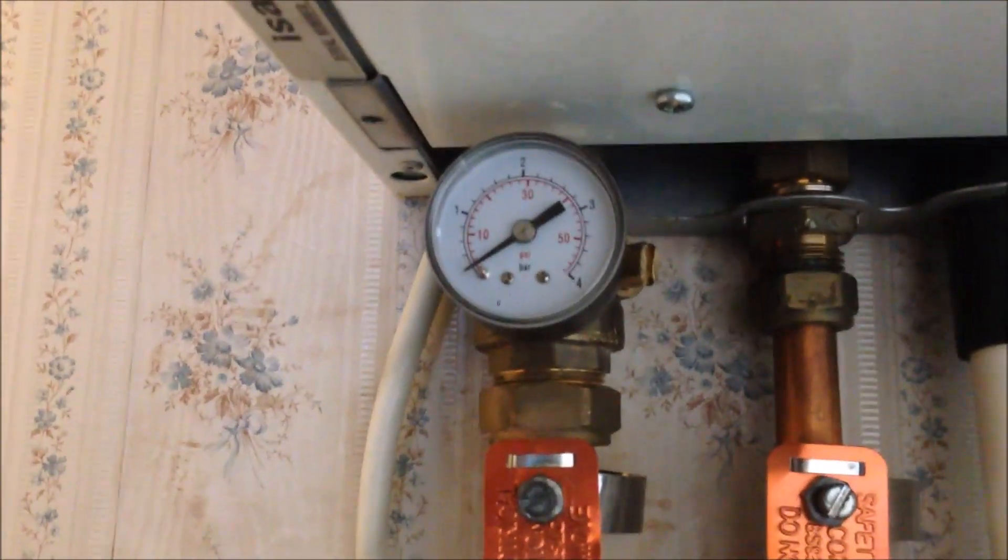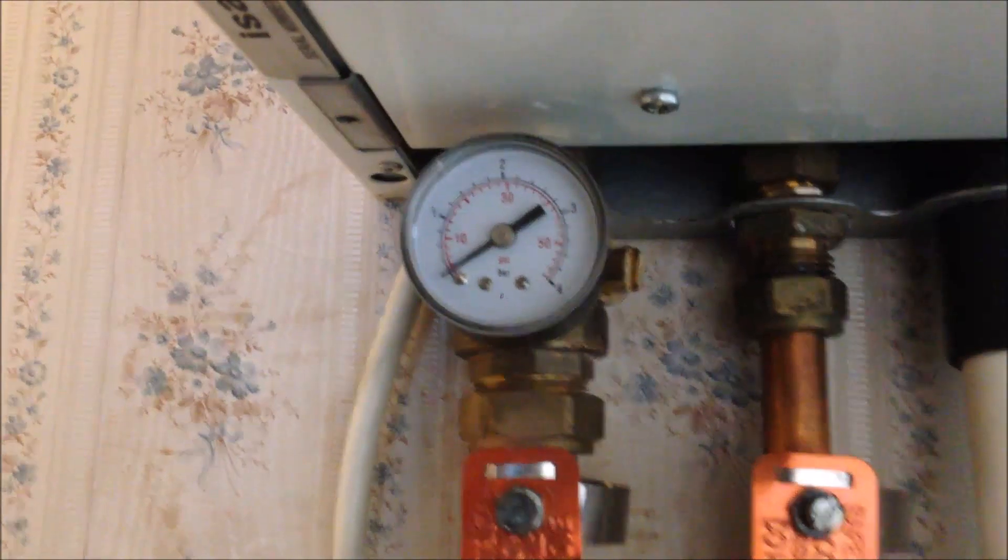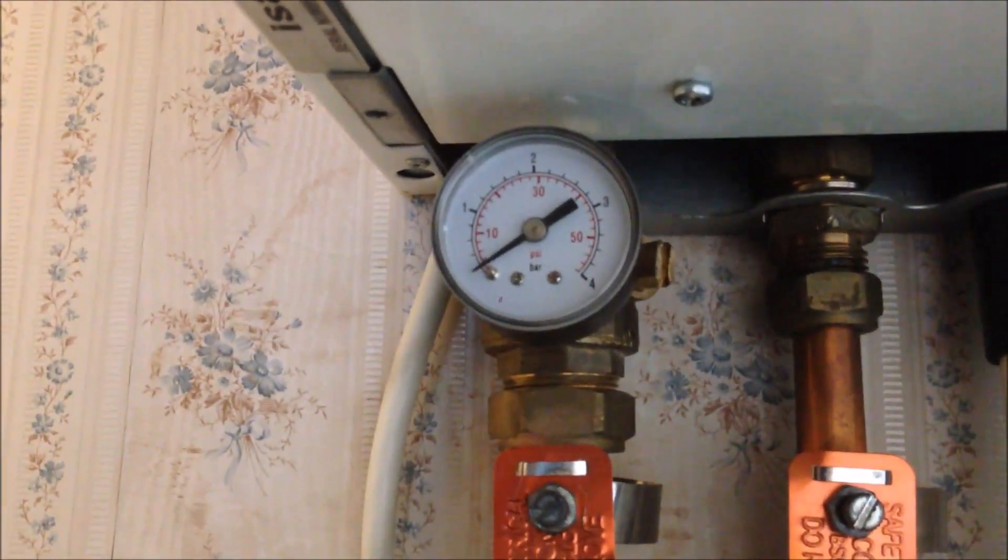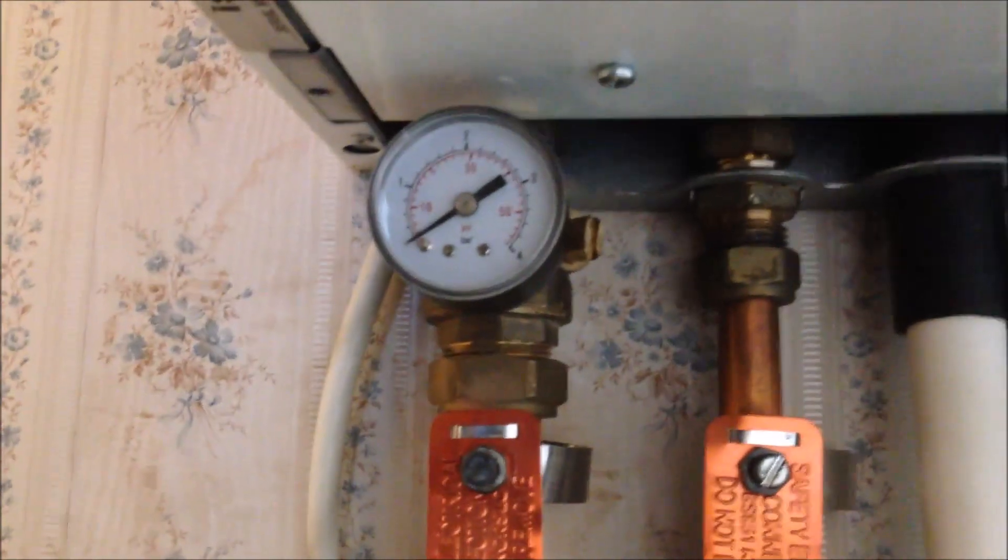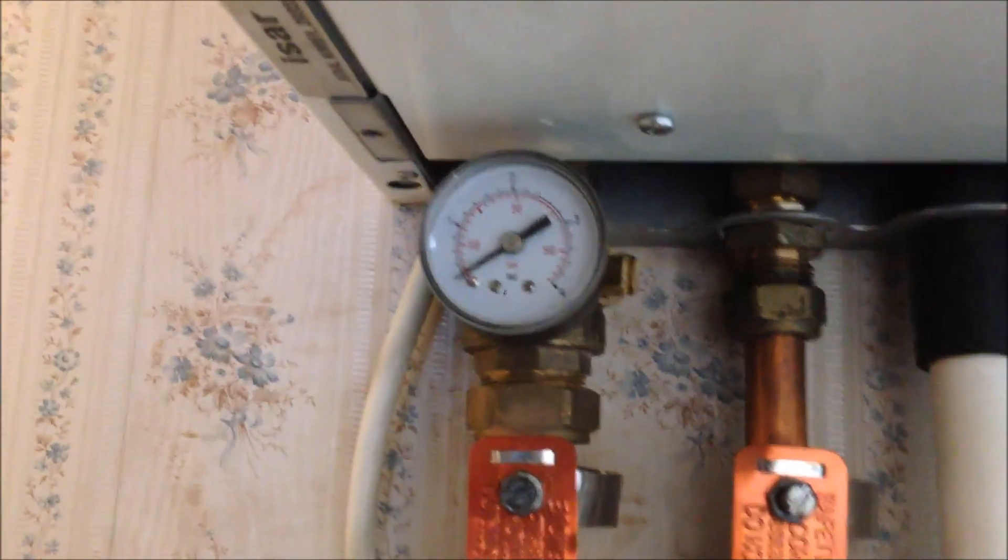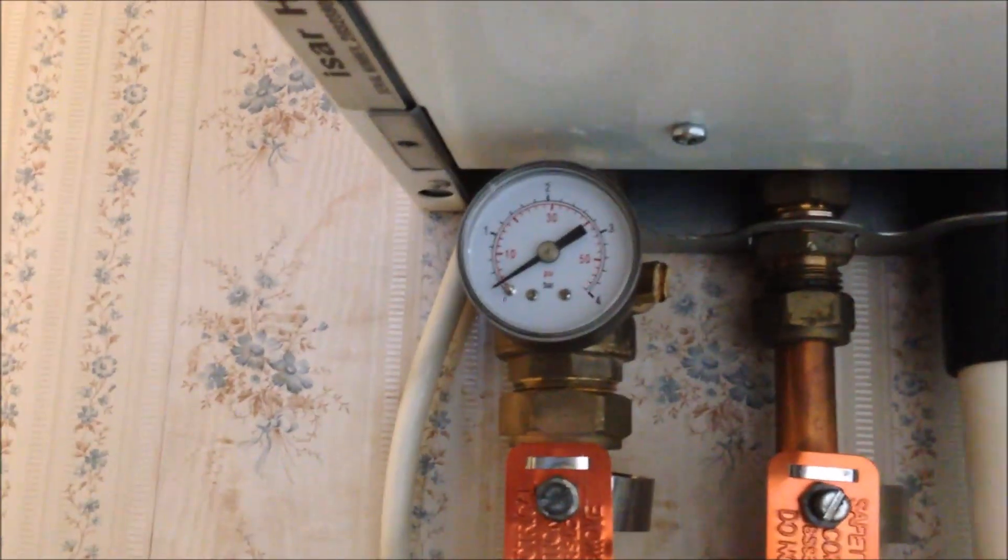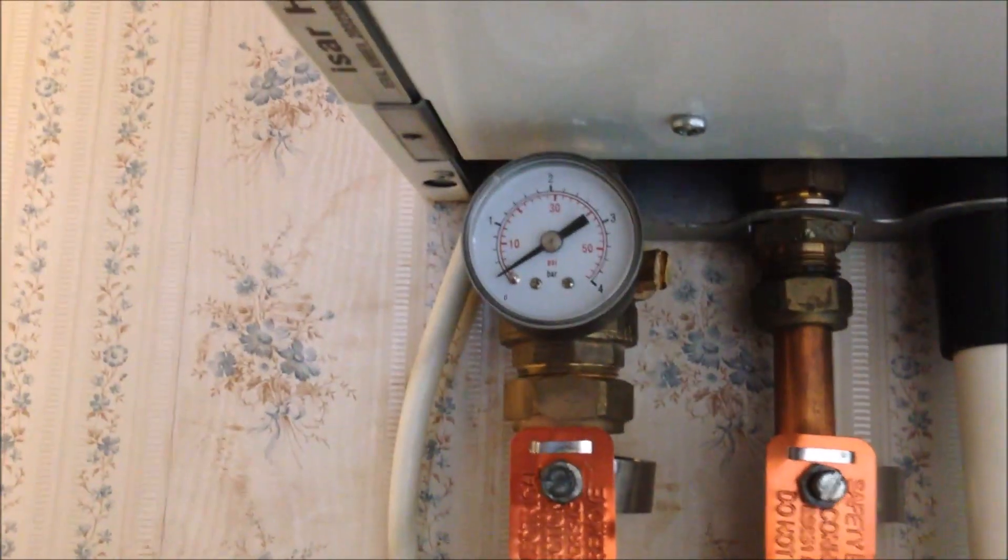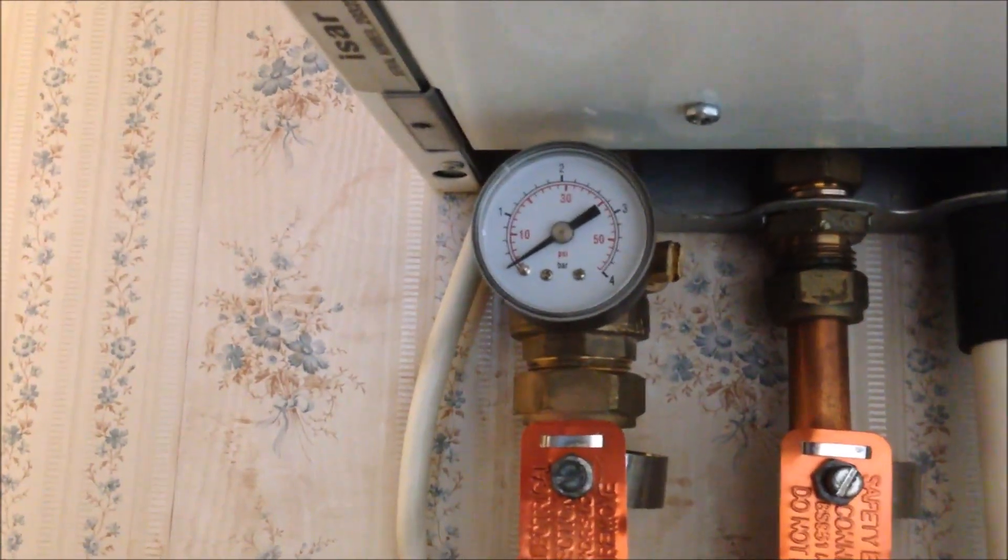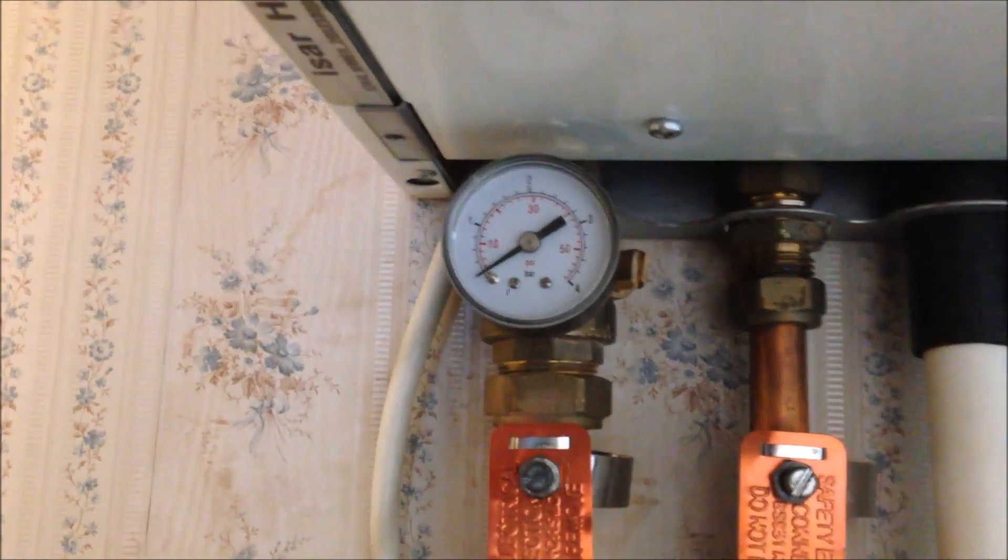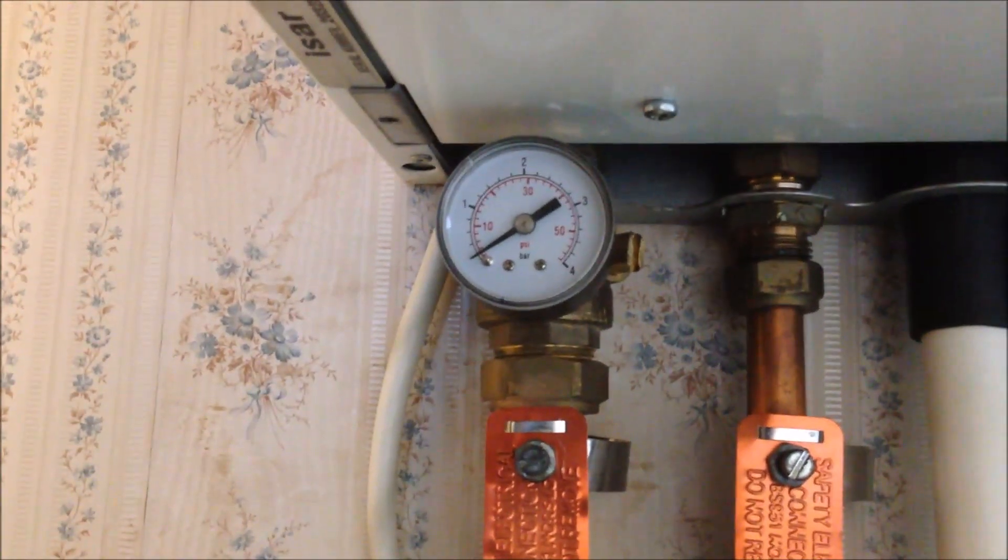Instruction said when the water is getting low, you should top the water up to one bar, and this particular boiler works well if it's over 0.2. So normally, I will top it up to half of a bar, and until it drops to 0.2, I will top up again.